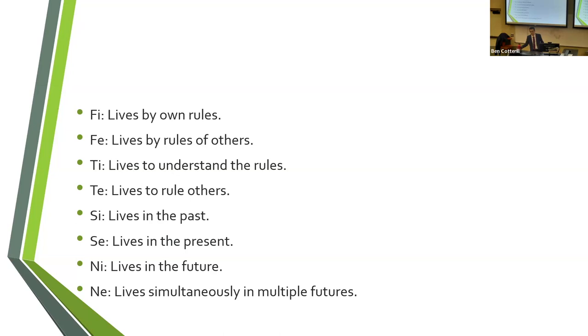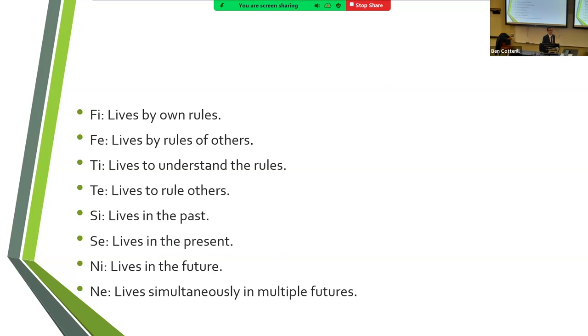The small letters are introverted or extroverted, and the capital letters are F for feeling, T for thinking, S for sensing, and N for intuition.